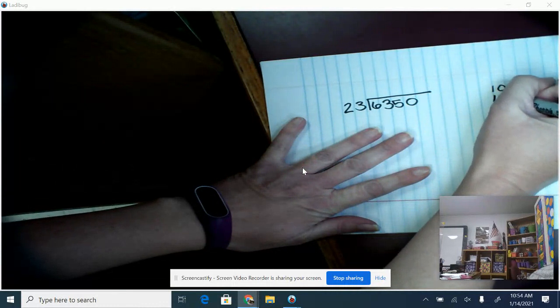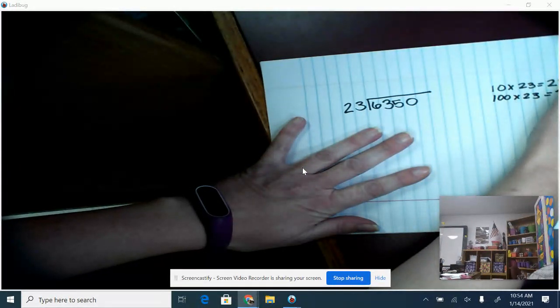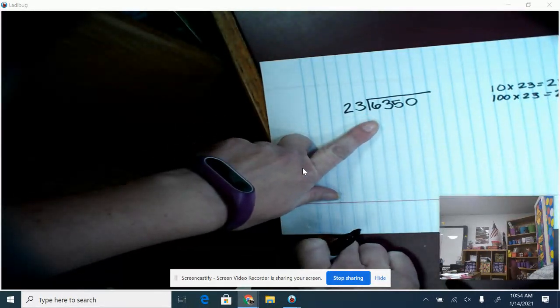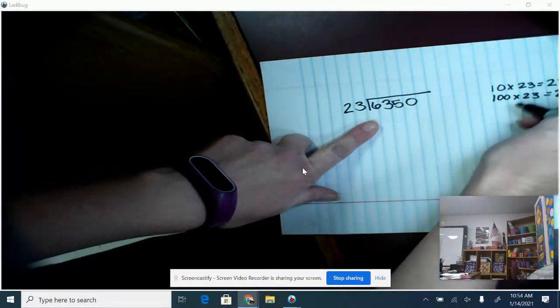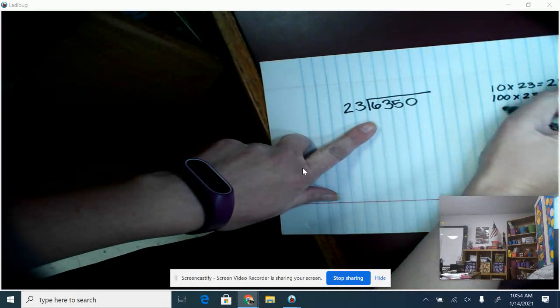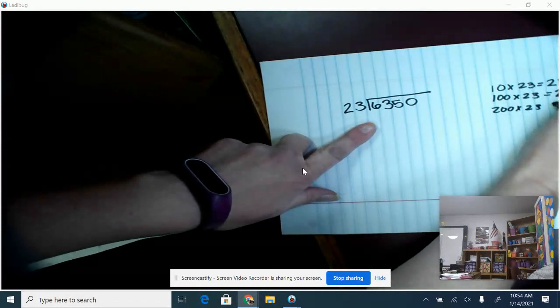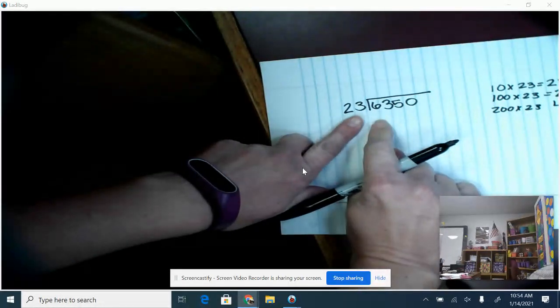But I could try 100, so 100 times 23, that gives me 2,300, so that's getting a little bit closer. Now, if I wanted to try to get even closer, I could double that. And if I did 200 times 23, that's going to give me 4,600. So that gets me even closer.